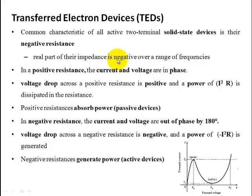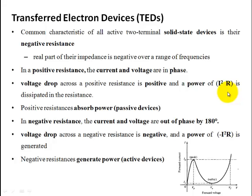We will discuss the tunnel diode. In the tunnel diode, there is a negative resistance region — from the peak to the valley of the I-V curve is the negative resistance region. A positive resistance device operates in phase, meaning voltage drop is positive and it absorbs power — it acts as a passive device. For a negative resistance device, current and voltage are out of phase by 180 degrees, the voltage drop is negative, it generates power — so it acts as an active device.